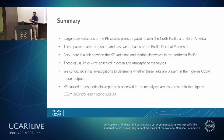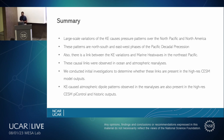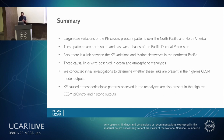To summarize: large-scale variations of the Kuroshio Extension cause pressure patterns over the North Pacific and North America. These patterns are the north-south and east-west phases of the Pacific Decadal Precession. There is also a link between Kuroshio Extension variations and marine heat waves in the northeast Pacific. These causal links were observed in ocean and atmospheric reanalysis. Here at NCAR, we conducted initial investigations to determine whether these links are present in the high-resolution CESM model outputs, and found that KE-associated atmospheric dipole patterns observed in reanalysis are also present in the high-res CESM PI control and historic outputs.